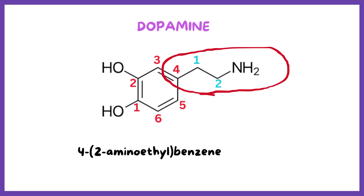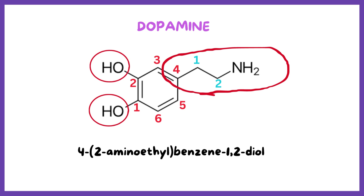So we can write 4-(2-aminoethyl)-benzene. Also, two hydroxyl groups are attached to the first and second position of the benzene ring. So the name becomes 4-(2-aminoethyl)-benzene-1,2-diol. The suffix for the hydroxyl group is '-ol' in IUPAC nomenclature. Then why 'diol'? Because there are two hydroxyl groups present.